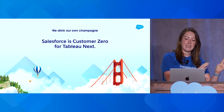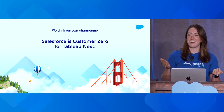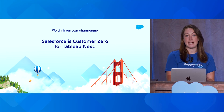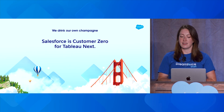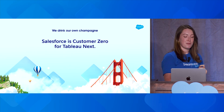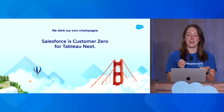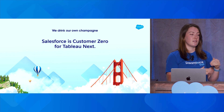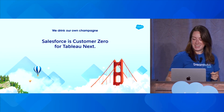So that's Tableau Next. Let's talk about the Customer Zero part. At Salesforce, we believe in drinking our own champagne, which means we want to be the first and best user of every single feature and product that we roll out. That's why I'm really excited about what Jen and Emmy did and what they're going to talk to you about today, because it's a best-in-class example of being one of the earliest users of agentic analytics at Salesforce.